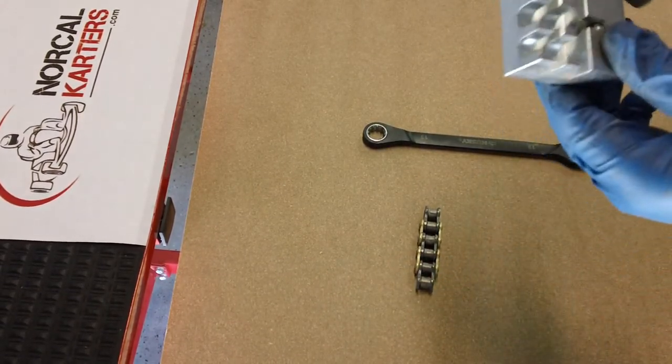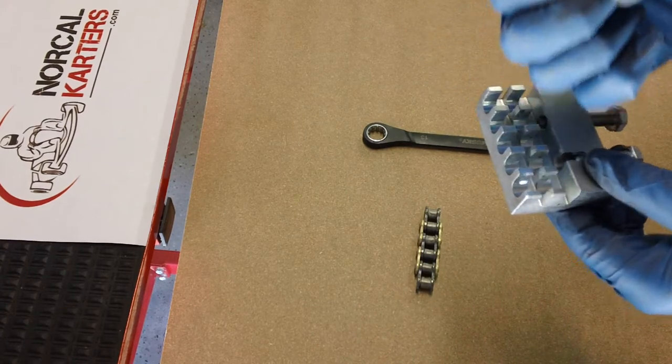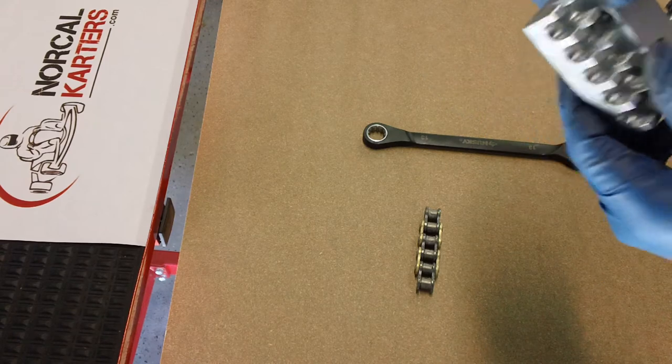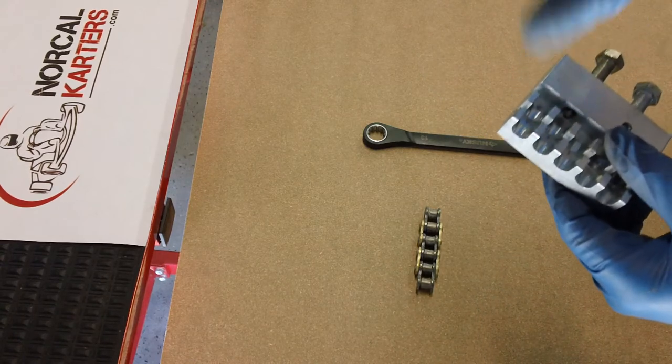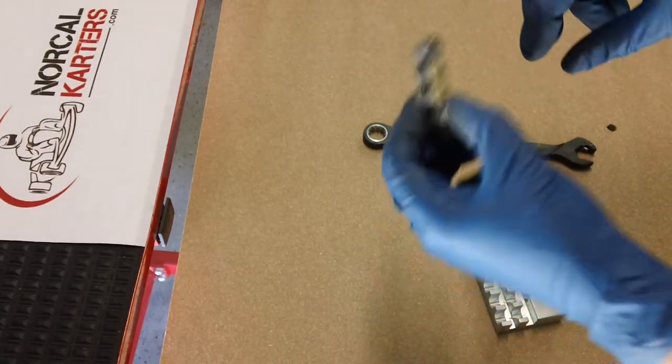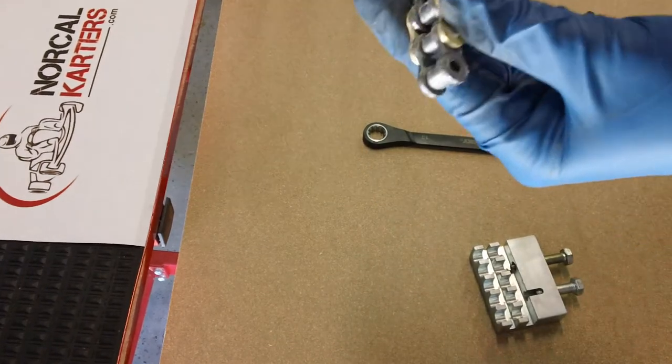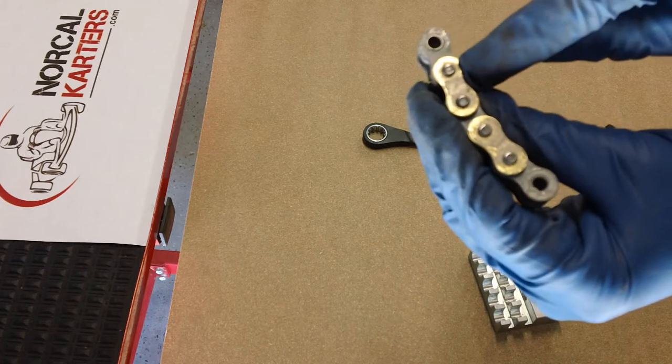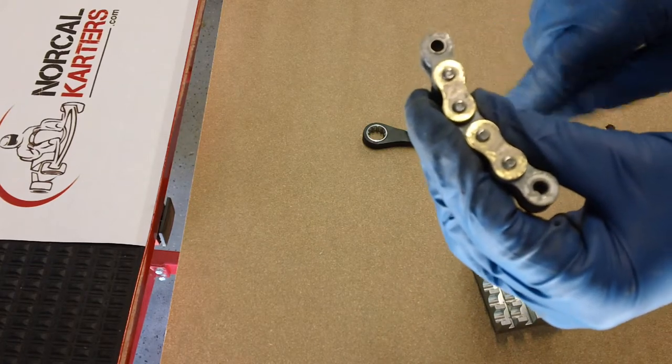There's also the style that looks more like a plier with a push pin going through it. It has little claws that go around the link and hold it like this, and you push the pin. But they all basically do the same thing: pushing the pin through the chain.